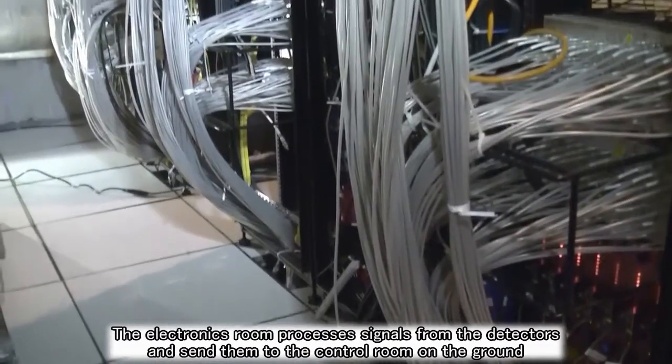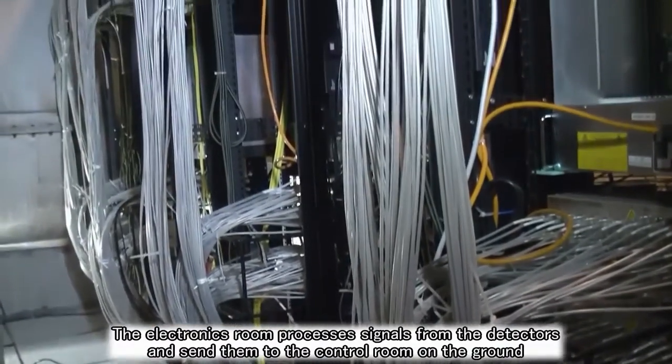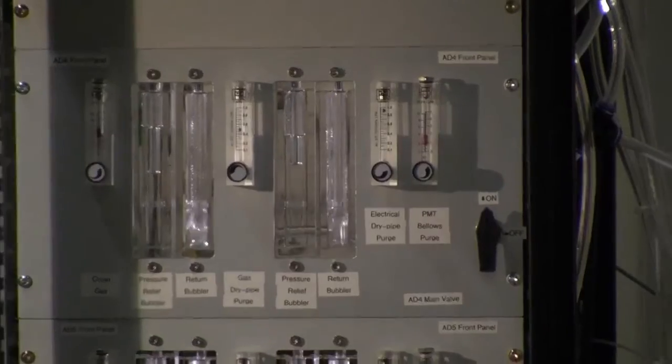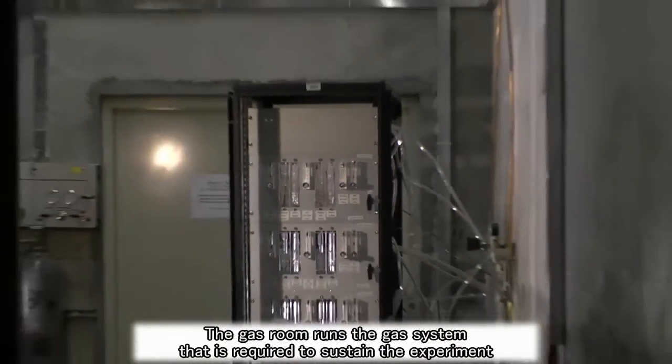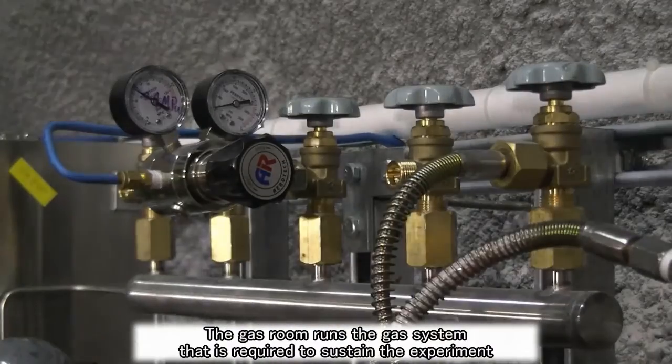The electronics room processes signals from the detectors and sends them to the control room on the ground. The gas room runs the gas system that is required to sustain the experiment.